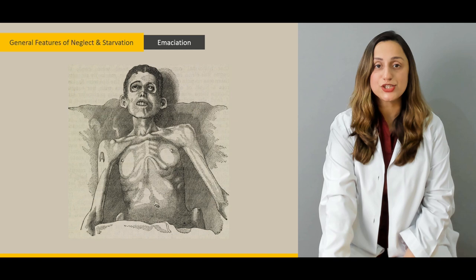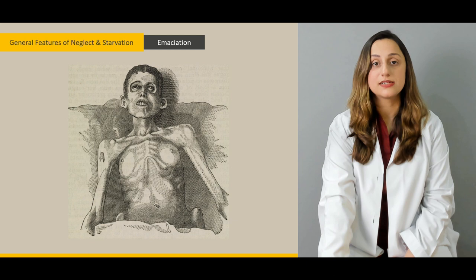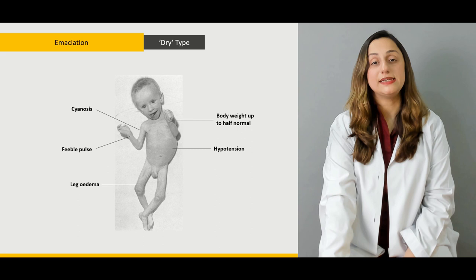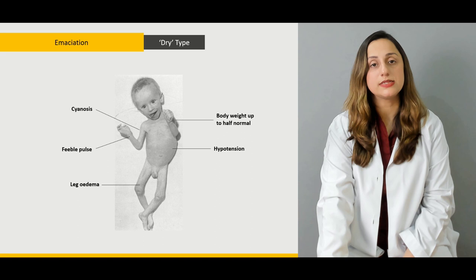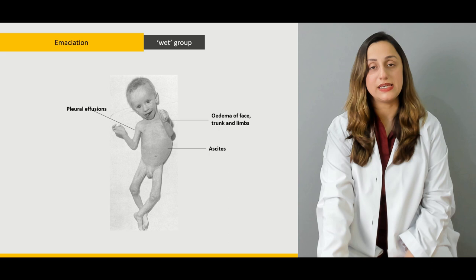Defining emaciation is one of the crucial factors in deaths relating to starvation deaths or relating to the deaths due to neglect on part of the adults or the environmental conditions. We'd be dealing with the types: we have the wet type, we have the dry type, what are the clinical findings, how do you clinically diagnose the cases of emaciations and the types of emaciations that we'd be dealing with, what are the key features.